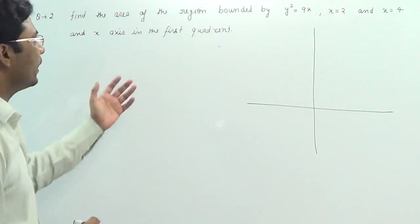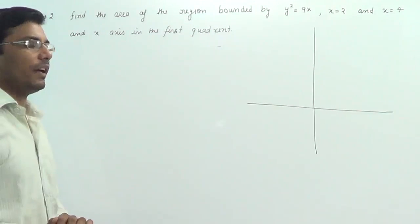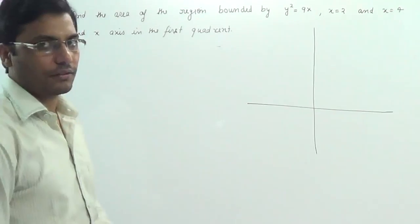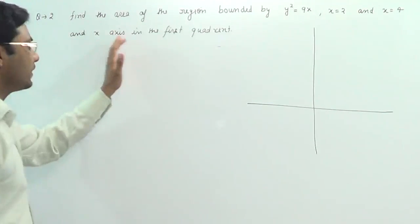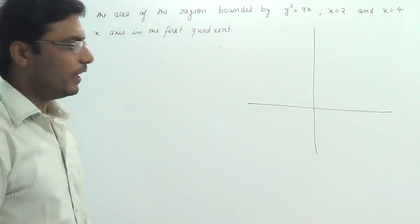In this question we need to find the area bounded by y² = 9x, x = 2, and x = 4, along with the x-axis in the first quadrant.